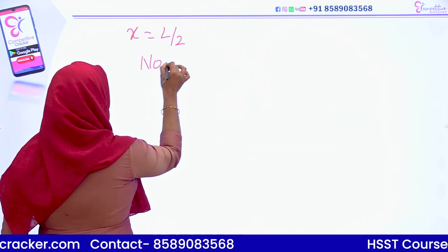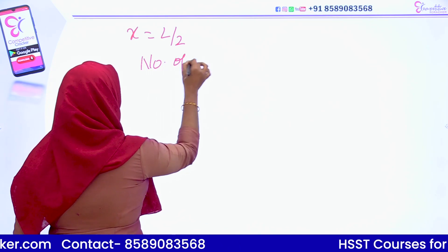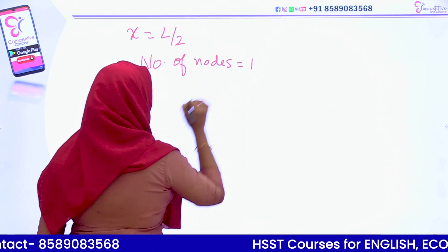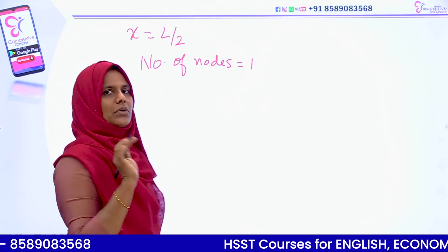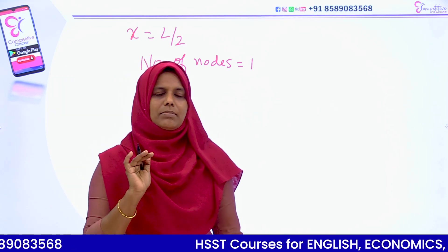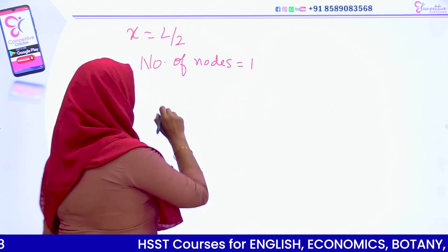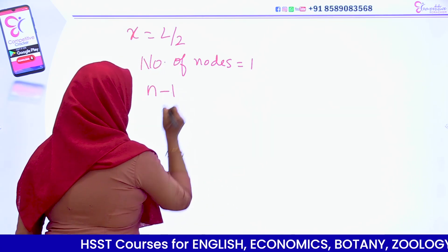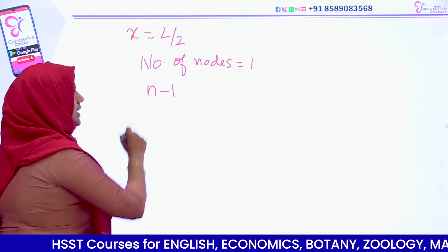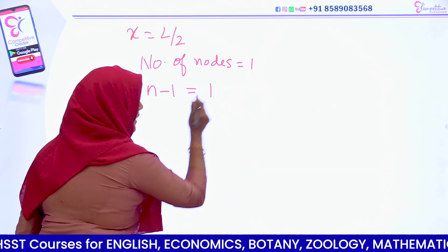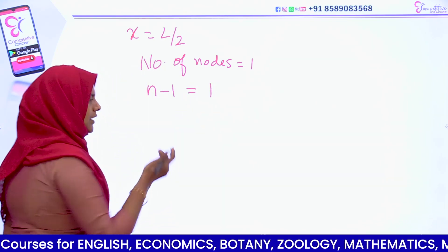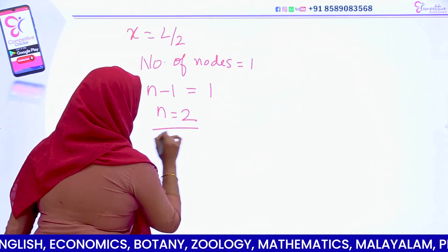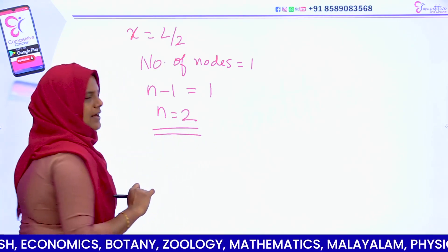The number of nodes is equal to one. The number of nodes equals n minus one. So n minus one equals one, therefore n equals two. The energy level is n equals two.